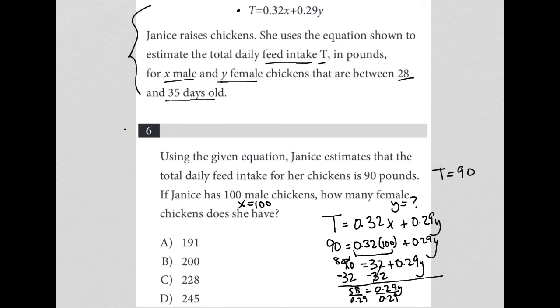I'm pretty sure that's 200, but let's just double check in the calculator so I don't make any silly errors. 58 divided by 0.29 is, in fact, 200. Therefore, Y equals 200. Since Y represents female chickens, that is the answer I'm looking for, and that is choice B.